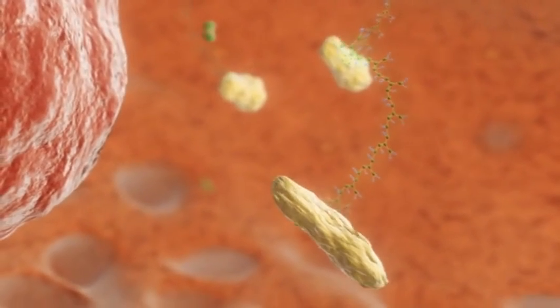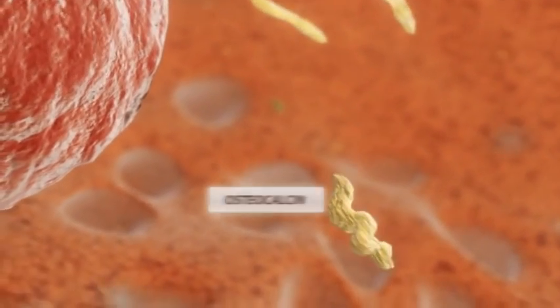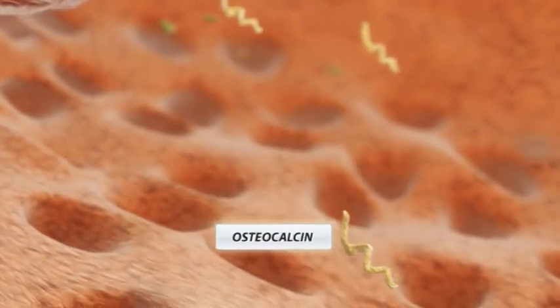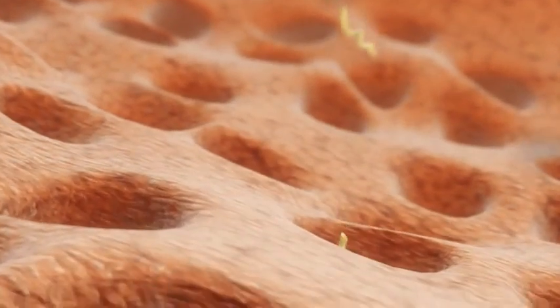MenaQ7 is thus the key in activating osteocalcin. After activation, osteocalcin changes and gets its active form. It is then ready to be transported to the bone matrix.